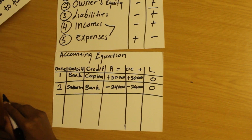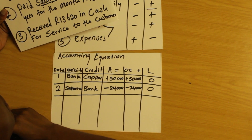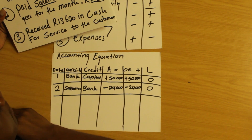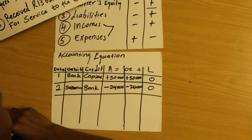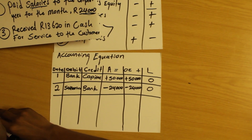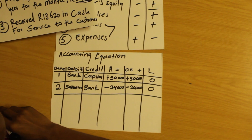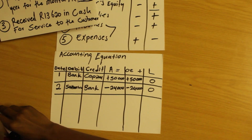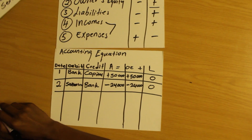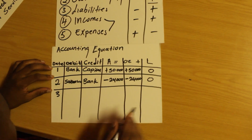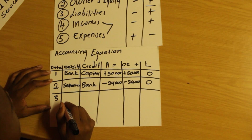The last transaction: we have received 13,620 in cash for services rendered to the customer. We've provided a service to the client of 13,620. Two accounts are affected: bank and service rendered. We have received money, so it's bank, and bank is an asset.